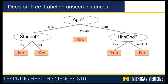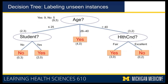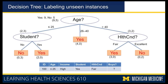Your model is: look at age first; if less than 25, look at student and make a decision; if between 26 and 40, the decision is yes; if greater than 40, look at health condition and make a decision. You also keep track of how many instances went through each branch — 14 at the top with nine yeses and five nos, then five instances down the less-than-25 branch with two yeses and three nos.